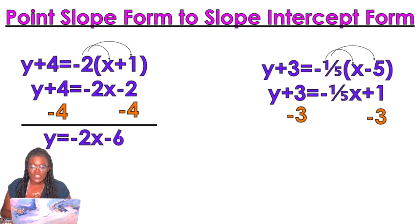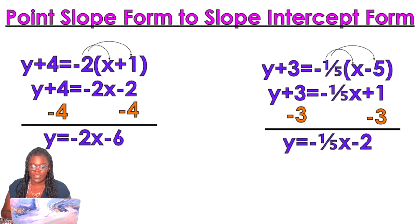Good. It's 1. So then, I'm gonna subtract the 3 because we gotta get y by itself. And we're gonna get y equals negative 1 fifth x minus 2.